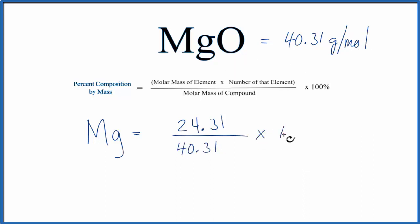Multiply by a hundred, and that'll give us the percent composition by mass of Mg in MgO. That turns out to be 60.31 percent.